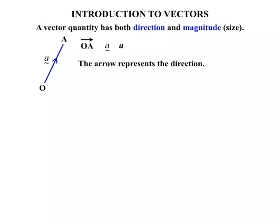So the arrow represents the direction. The length of the line represents the magnitude. So let's look at an example.